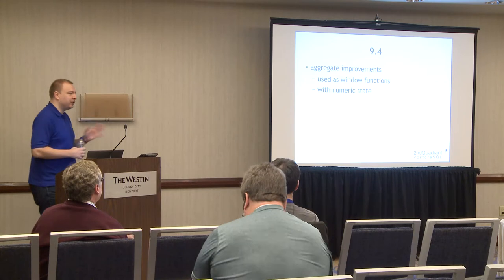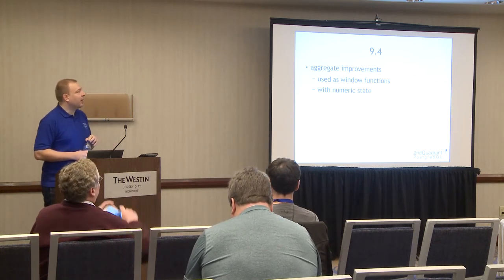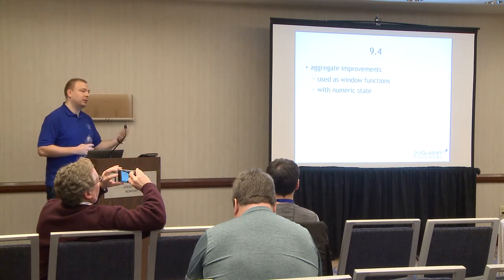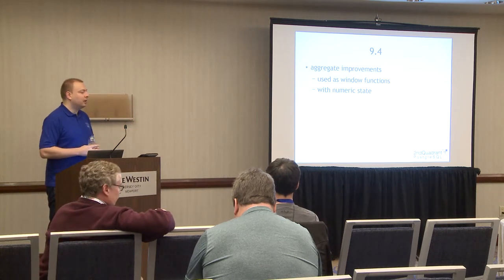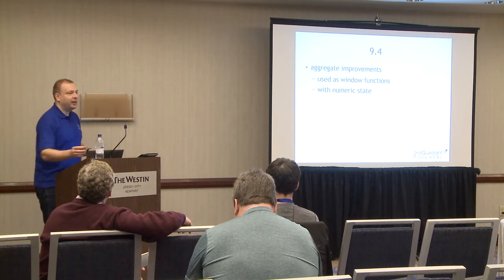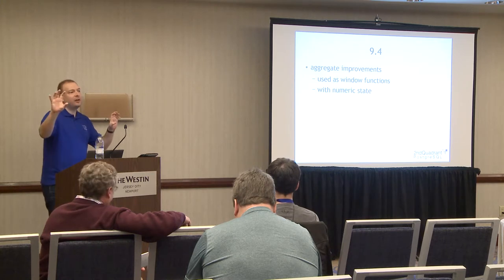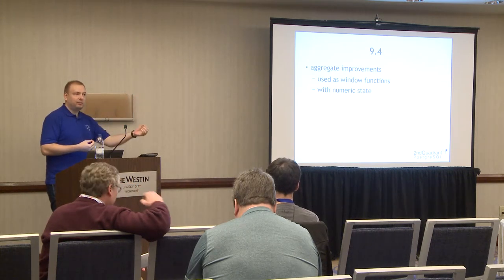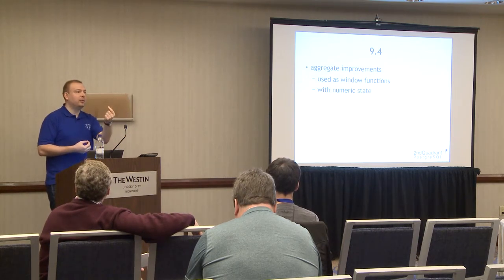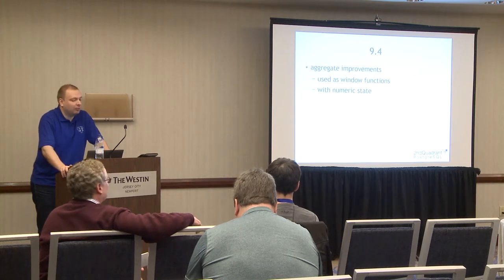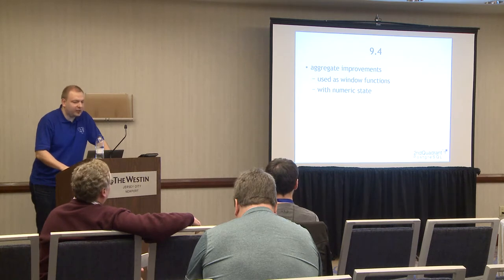I'll skip 9.3 because it didn't have any significant improvements in this area. In 9.4, there were improvements in aggregate function computations. If you have a query doing sum, average, and standard deviation on the same column, those functions internally keep the same state: sum needs to sum; average needs a sum and count; standard deviation uses the same internal state. So instead of doing triple the work, 9.4 computes it just once — sharing the state between aggregate functions.